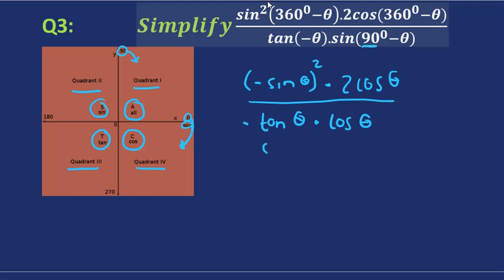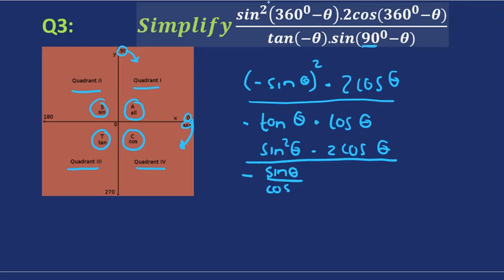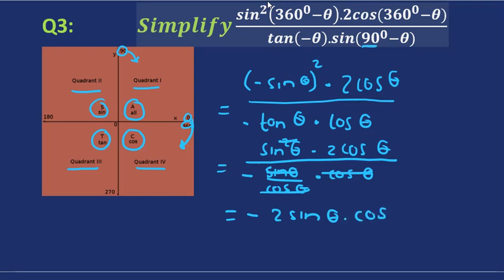Remember, the square will make sine squared positive. We can write tangent as sine over cosine. So we've got a cancellation there, and the sine will cancel out one of those two sines. So what we're left with is times cosine theta. And at grade 11, that is your solution.